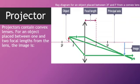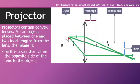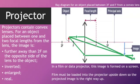Projectors contain convex lenses. For an object placed between one and two focal lengths from the lens, the image is further away than 2F on the opposite side of the lens to the object. Inverted, enlarged, real. In a film or data projector, this image is formed on a screen. Film must be loaded into the projector upside down so the projected image is the right way up.